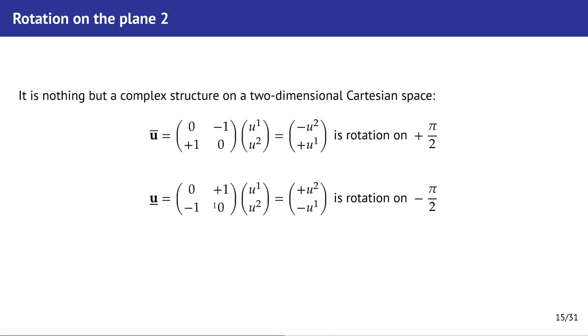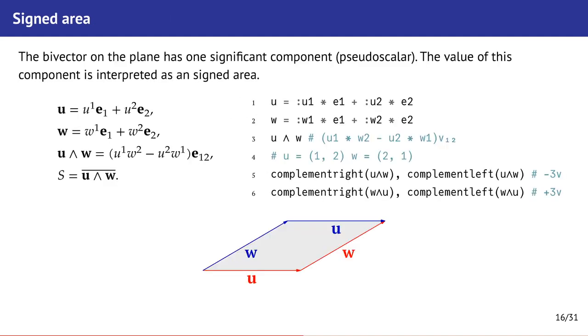The example shows a rotation in two-dimensional Cartesian space and it gives us a complex structure. Another example is signed area. This is generalization of signed area. We calculate it using the wedge operation. We take two vectors u and w, find the outer product and then right complement. Right complement from bivector in two-dimensional space will give us a scalar value and this scalar value will be signed area.